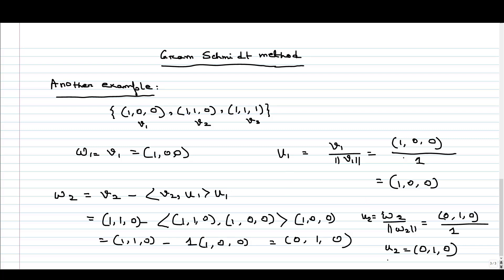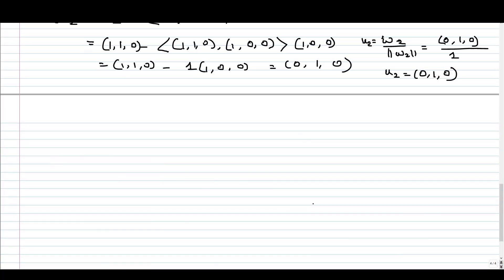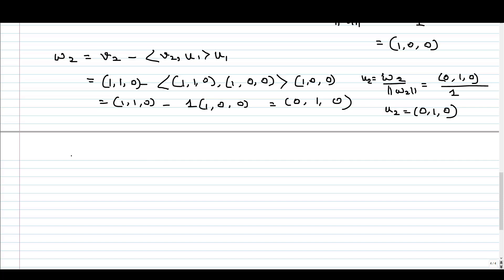Okay. So let us calculate the third one. For the third one, similarly, we have to take W3. W3 is V3 minus V3 inner product with U1 and multiply it with U1, minus V3 inner product with U2 and multiply it with U2.